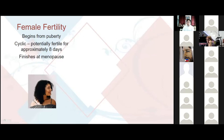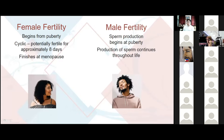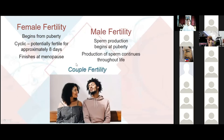For male fertility, sperm production begins at puberty — we call this spermatogenesis. Once sperm production begins at puberty, it continues throughout life. That is why male fertility begins from puberty until death, which is quite different from female fertility. When you join the two, we call it couple fertility, and couple fertility leads to the transmission of life — the participation of man and woman in God's creative work in bringing forth an immortal soul.